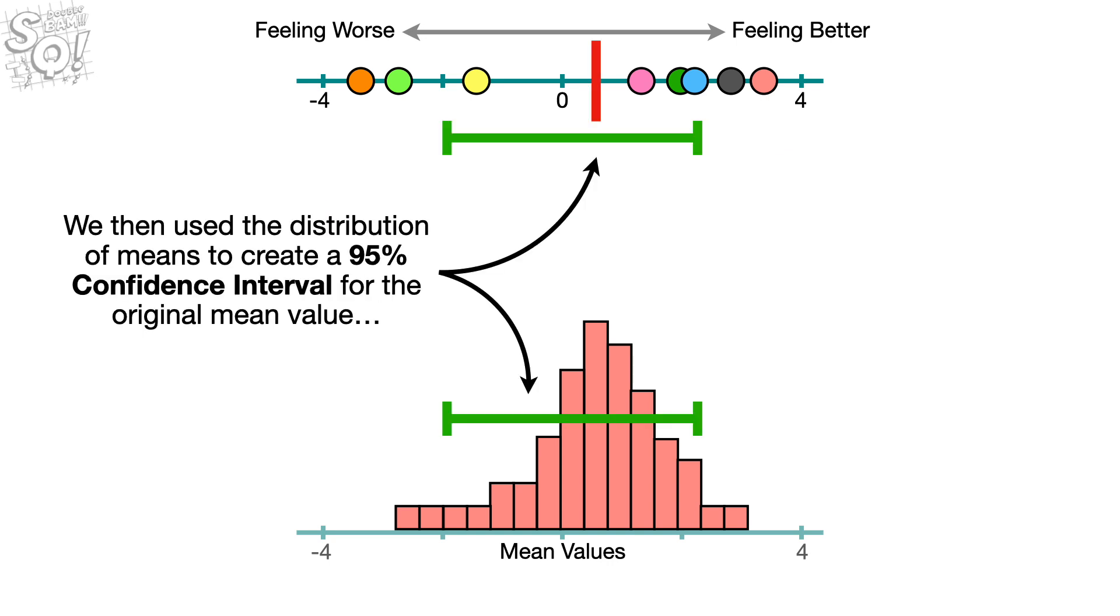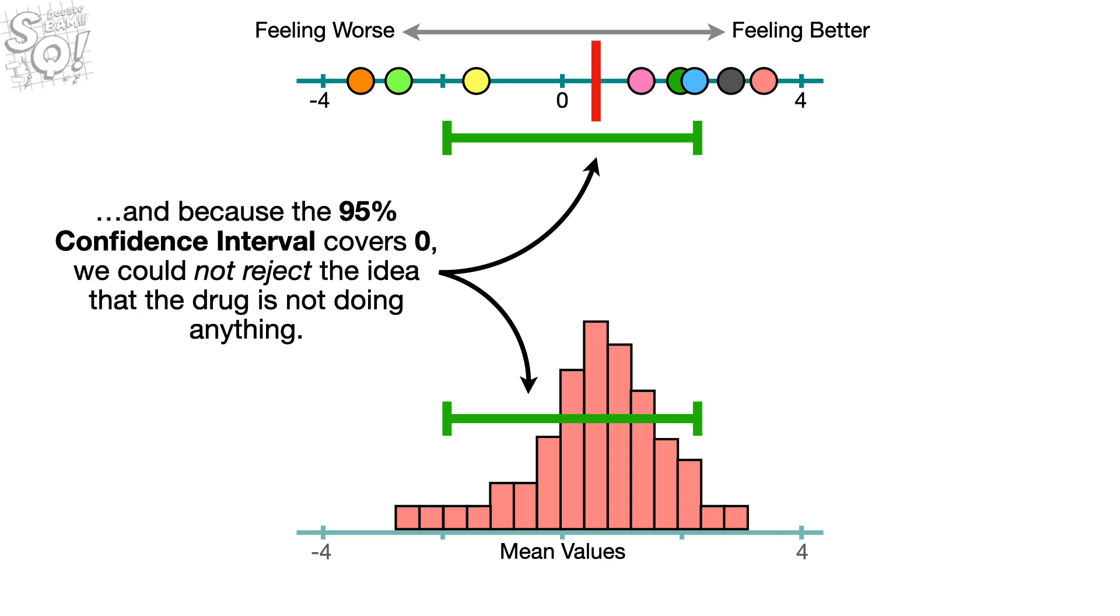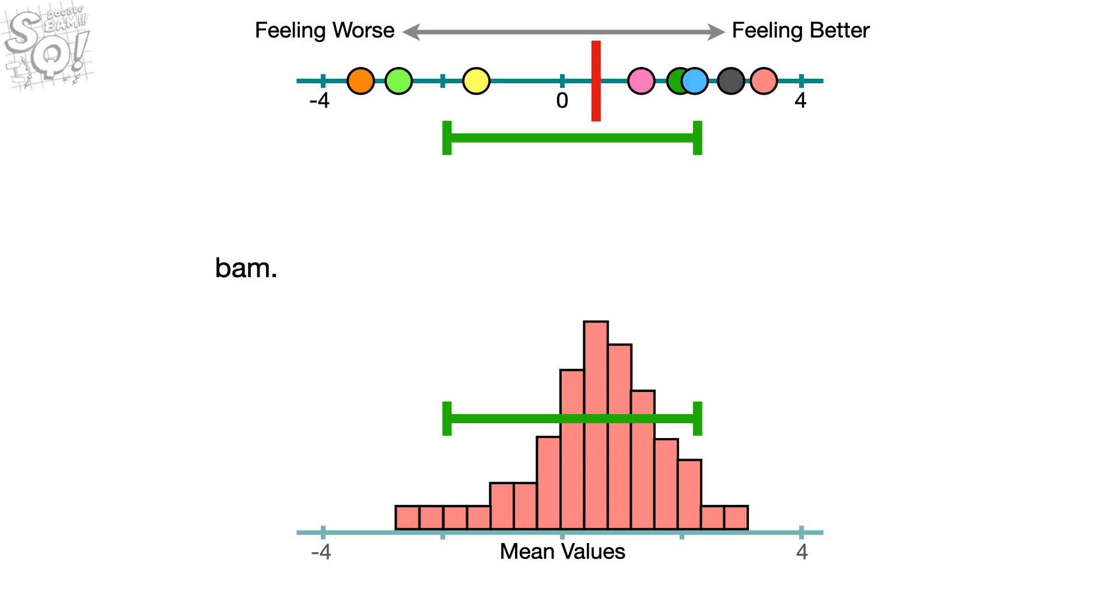We then used the distribution of means to create a 95% confidence interval for the original mean value. And because the 95% confidence interval covers zero, we could not reject the idea that the drug is not doing anything. Bam.